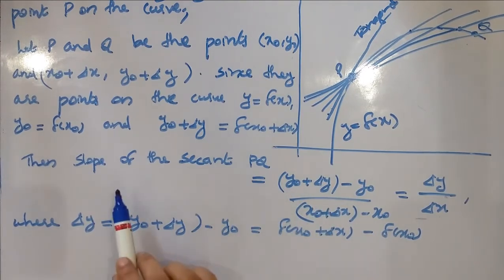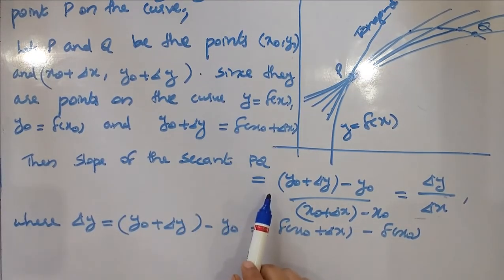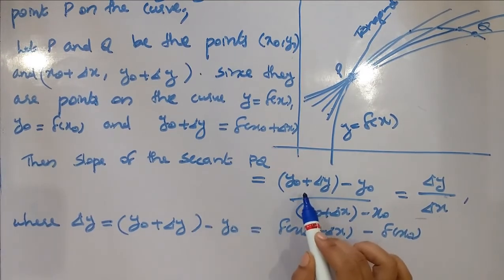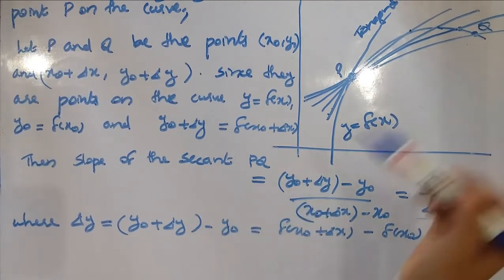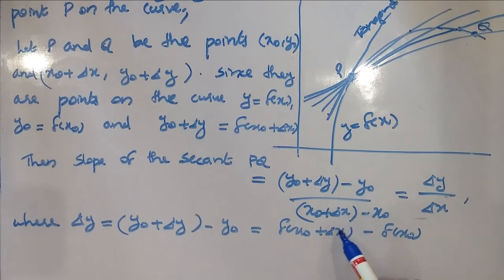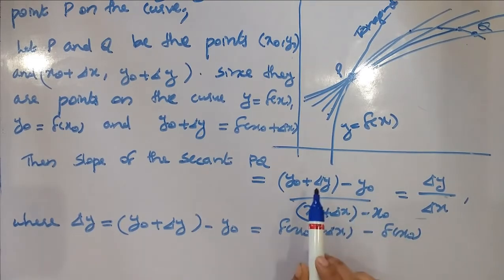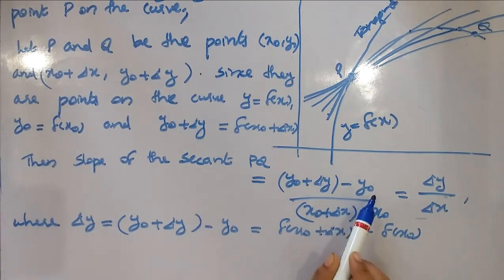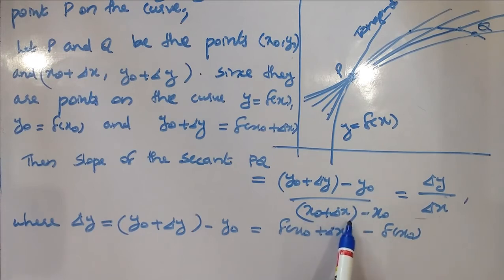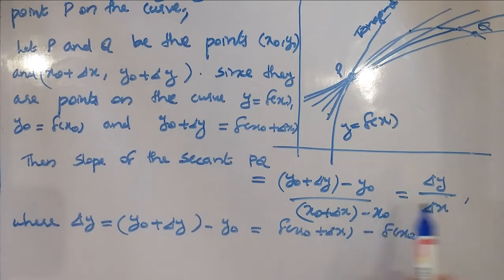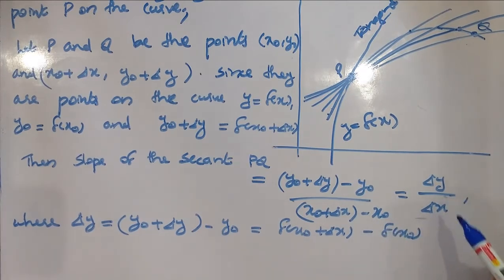The slope of the secant PQ is: (y₀ + Δy − y₀) divided by (x₀ + Δx − x₀), which equals Δy/Δx.